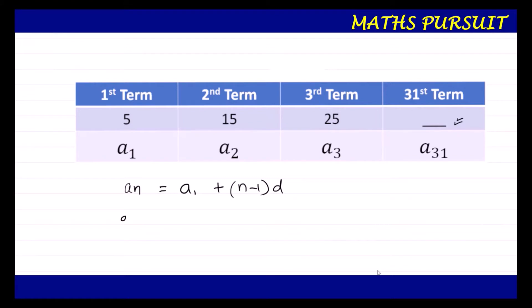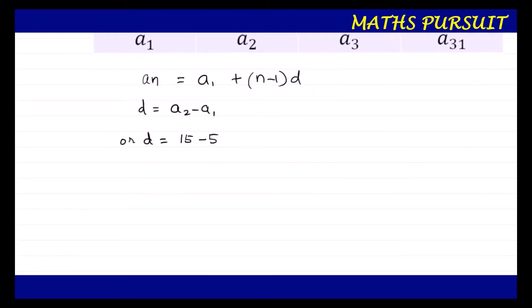Here, d = a2 − a1. The common difference is a2 minus a1, so d = 15 − 5, which gives us d = 10. We have found the value of d. Now let us put all these values into our arithmetic progression formula.